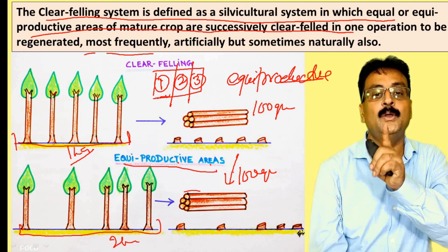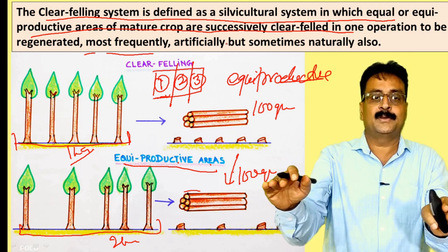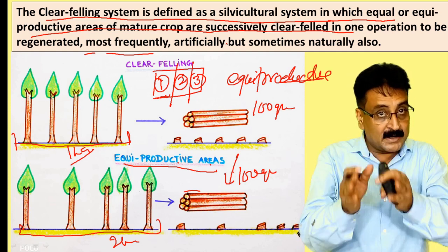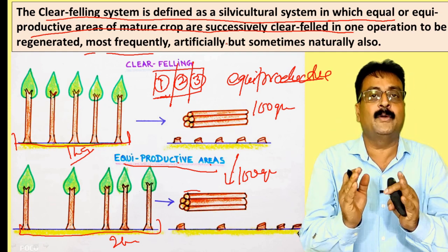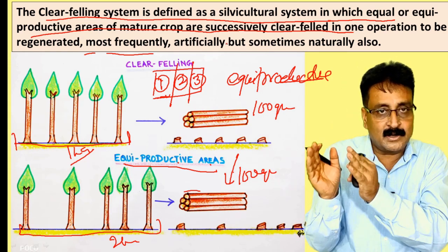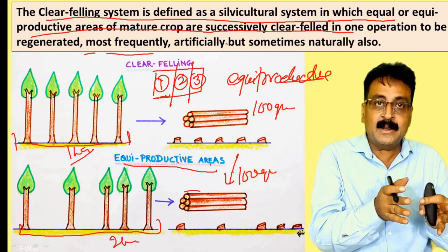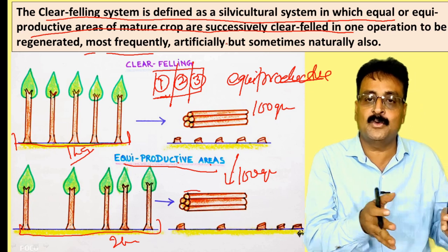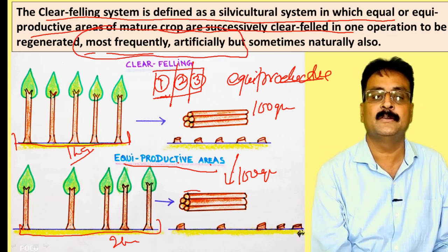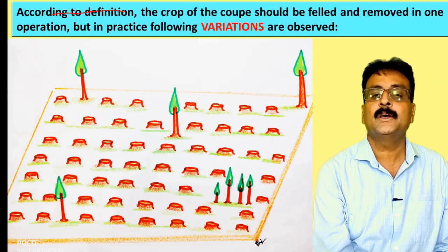The crop is felled and removed in one operation, to be regenerated either naturally or artificially, but more frequently artificially. In shelter wood and selection systems we go for more natural regeneration, but in clear felling our concentration is more on artificial regeneration.